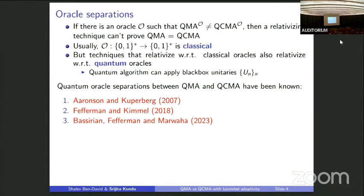These separations are still quantum, but maybe a bit less quantum than the one shown by Aaronson and Kuperberg. The standard model of oracle separations is a classical oracle, and if you show a separation with respect to a classical oracle, you're showing a separation for a classical problem rather than a quantum problem — you're asking whether quantum witnesses provide any advantage for a classical problem, which is maybe stronger. People have been trying to show a classical oracle separation, and there has been some progress recently in the last couple of years.